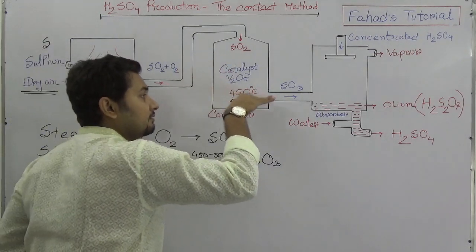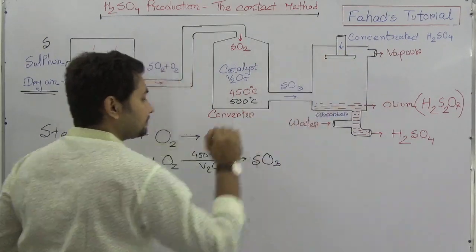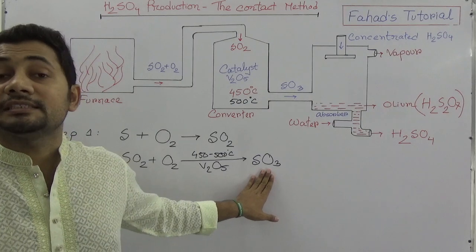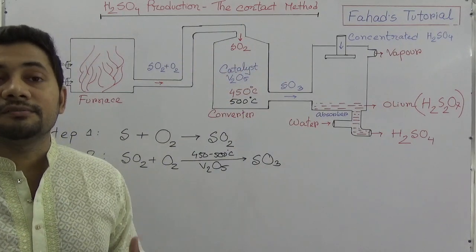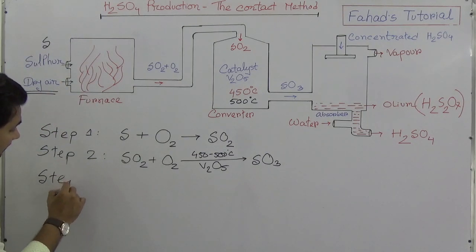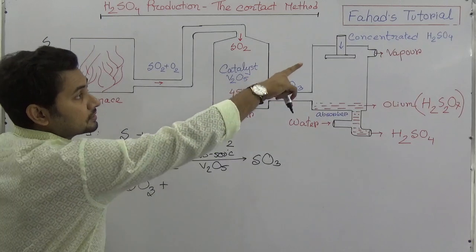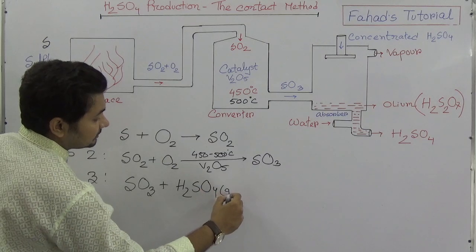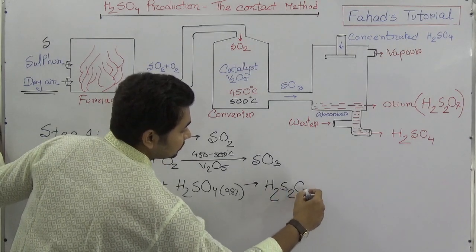Then this sulfur trioxide goes to the absorber chamber. Sulfur trioxide could be added directly with water to produce sulfuric acid, but this is dangerous for industry because it creates a huge acid fog, and the condensation of that fog of sulfuric acid is very difficult to manage. That is why in Step 3, the sulfur trioxide is soaked by concentrated sulfuric acid — H2SO4 at 98% concentration.